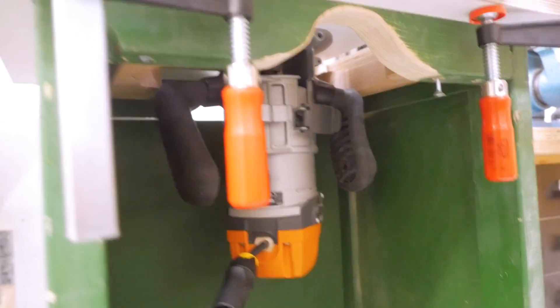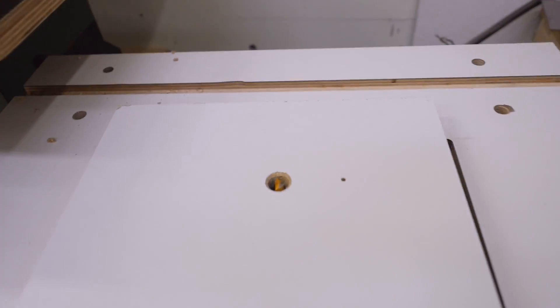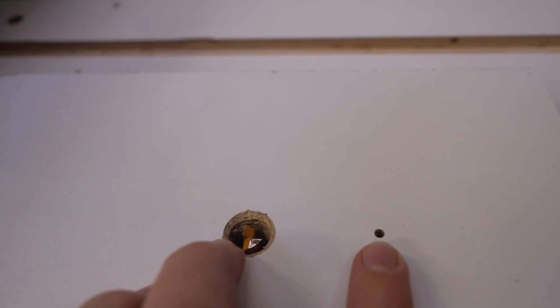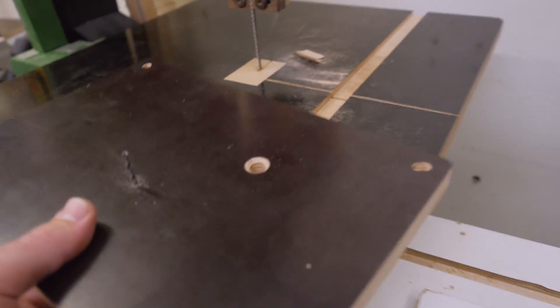To make this hole I just screwed this base to a scrap board, installed a bit and drilled a hole exactly the distance I need for the hole in the insert plate. I can now stick the drill bit into this hole.